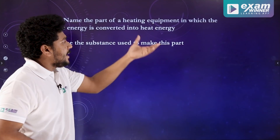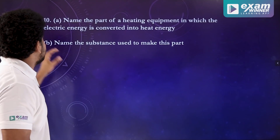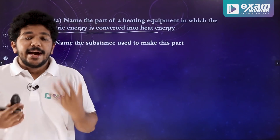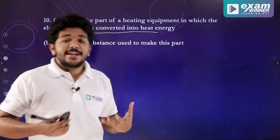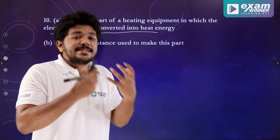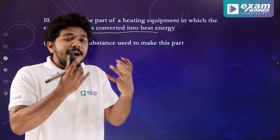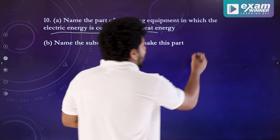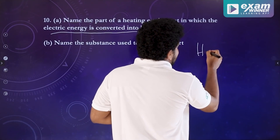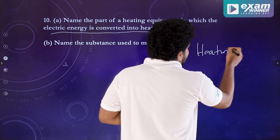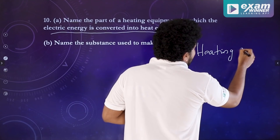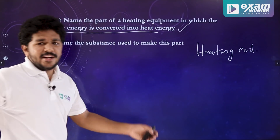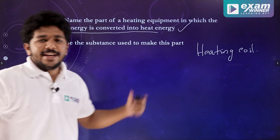Name the part of a heating equipment in which the electric energy is converted into heat energy. In this iron box, we have to use electrical energy. It is a heating coil. If you have a heating coil and you have a new coil, you can use a new Nichrome.